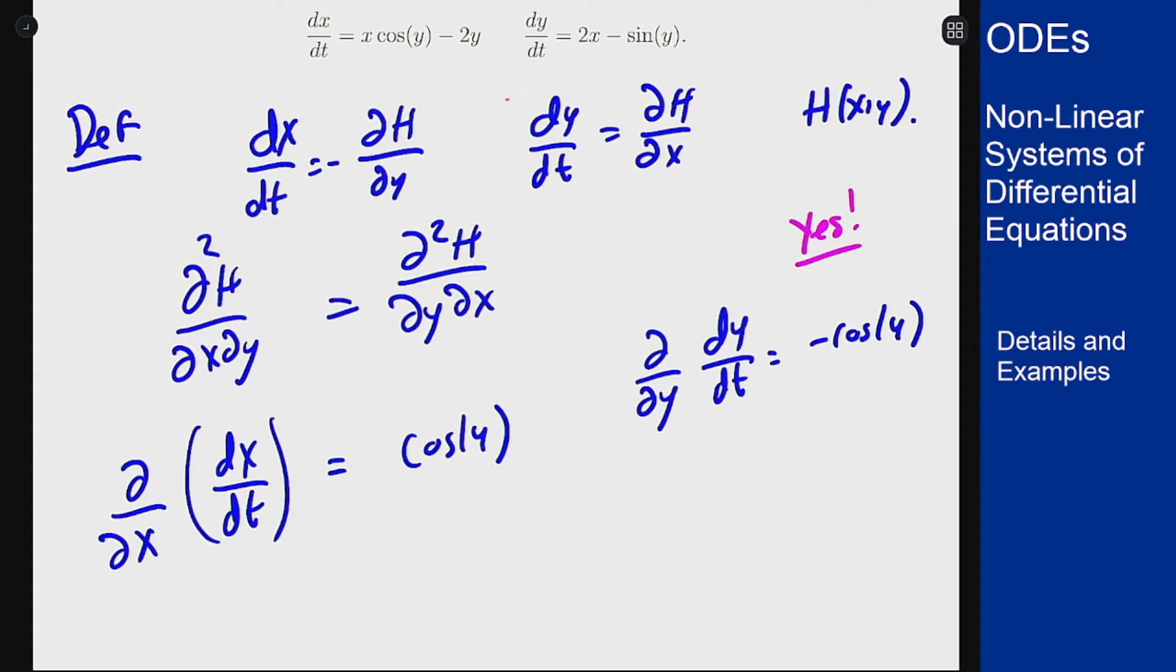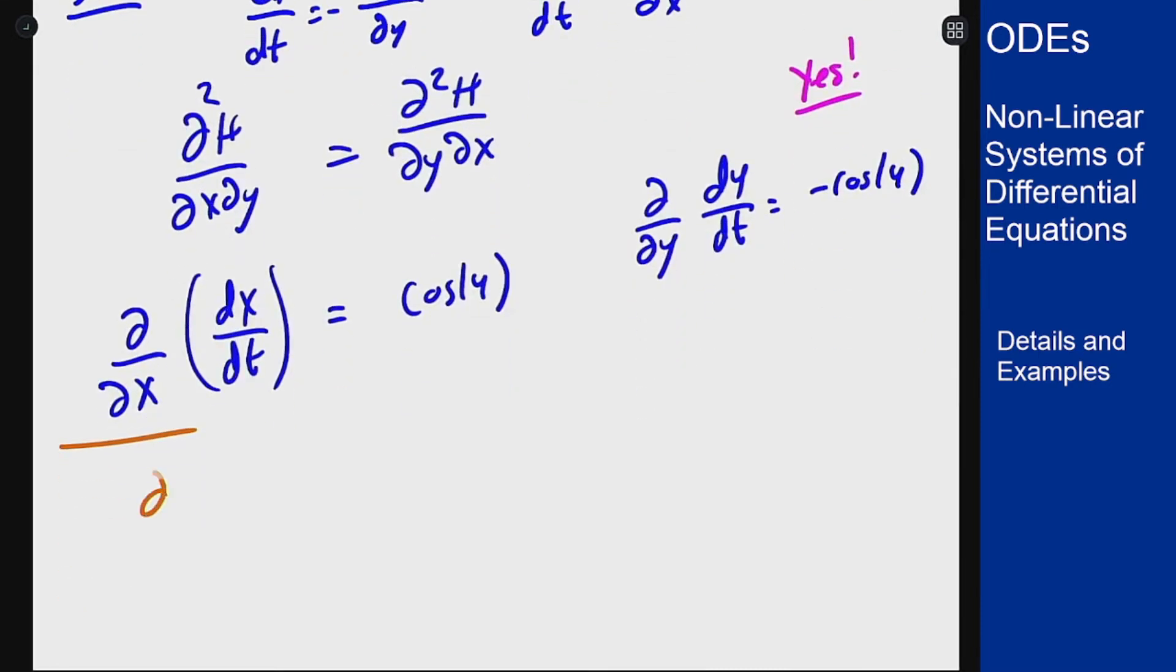If dy/dt is partial h partial x, that means that for our setup here, partial h partial x is 2x minus sine of y.